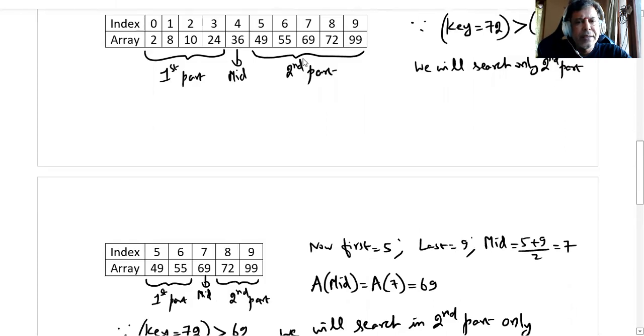We're writing the second part like this. Again, we identify the first index as 5, last index as 9, and mid will be (5 + 9) / 2, which is 7. That means our A(mid) becomes A(7), which is 69. So this becomes mid, this becomes your first part, this becomes your second part.